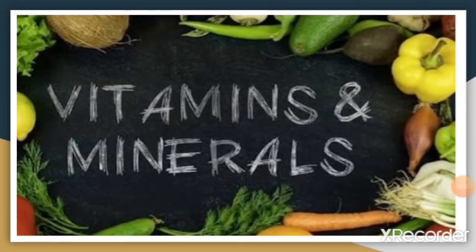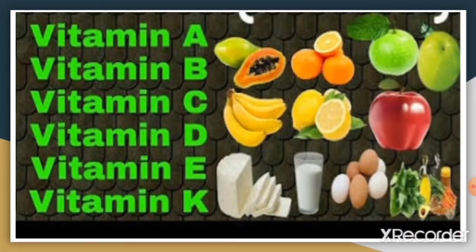The next food group is vitamins and minerals. Food items such as fresh fruit, vegetables, milk, egg and peanuts are rich in vitamins and minerals. They protect us from diseases and keep us fit and healthy, and are also called protective food. Vitamin A improves eyesight and keeps our skin healthy. Vitamin B complex is needed for various functions of the body. Vitamin C helps to fight infections and keep our gums and teeth healthy. Vitamin D helps in proper absorption of calcium in our body. Vitamin E and Vitamin K protect us from diseases and keep us fit and healthy.